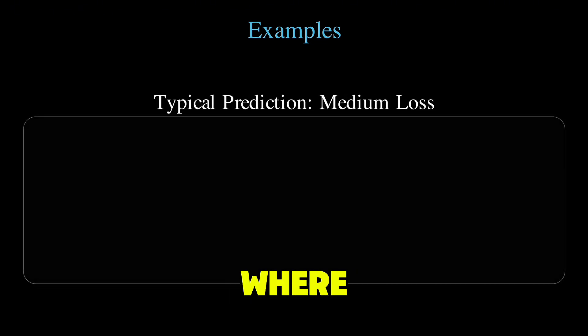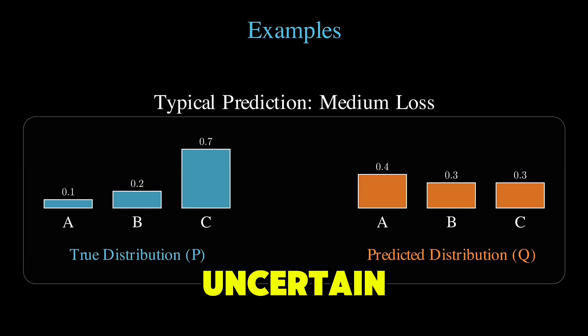For a typical case where our model is mostly right but uncertain, we'd get a moderate value.